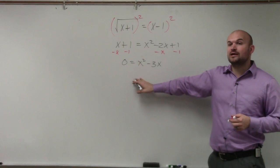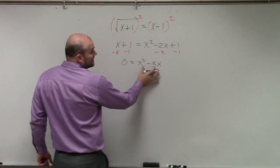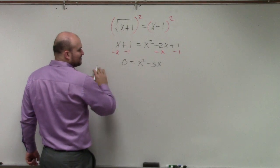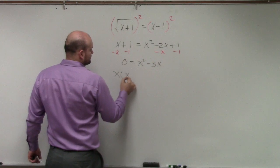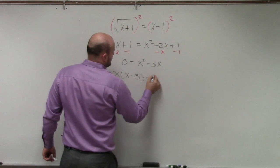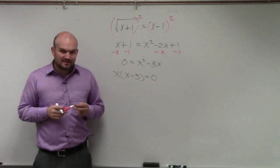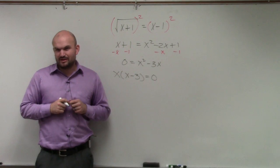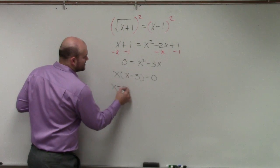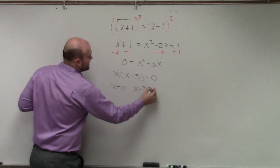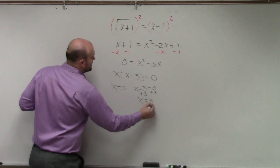Now we can apply the zero product property to solve. I've got to factor out an x here. I'm going to flip this over so I have my x's on the left side — it doesn't matter, I just prefer that. Now using the zero product property: x equals 0, and x minus 3 equals 0, so adding 3 to both sides gives x equals 3.